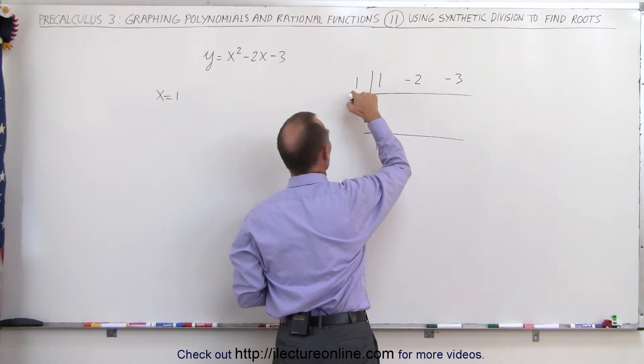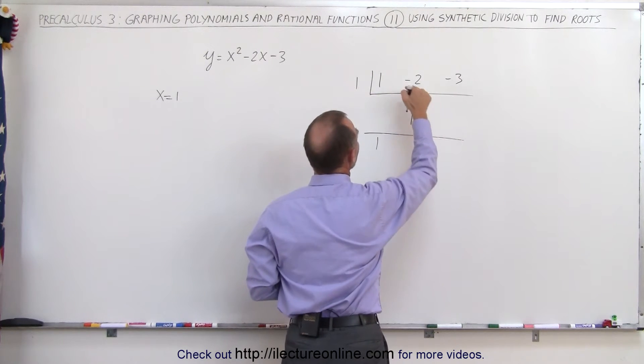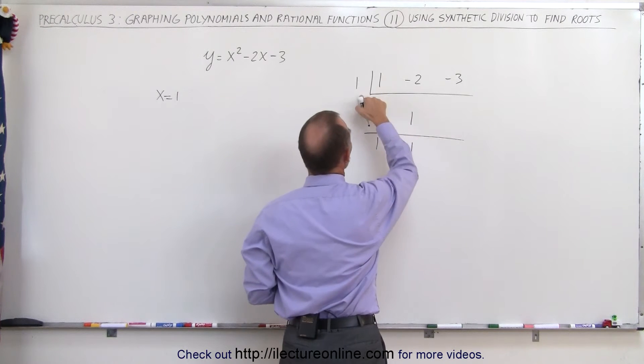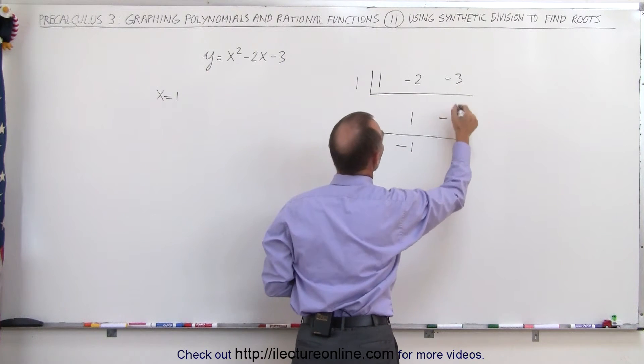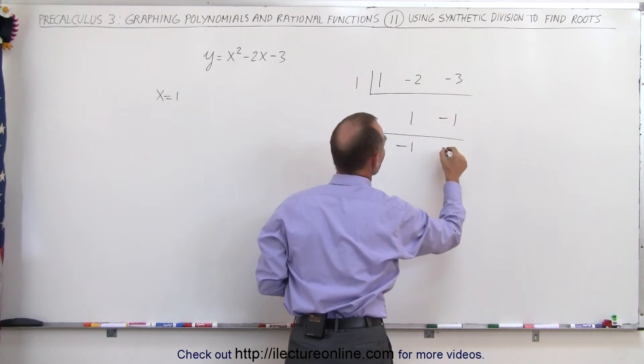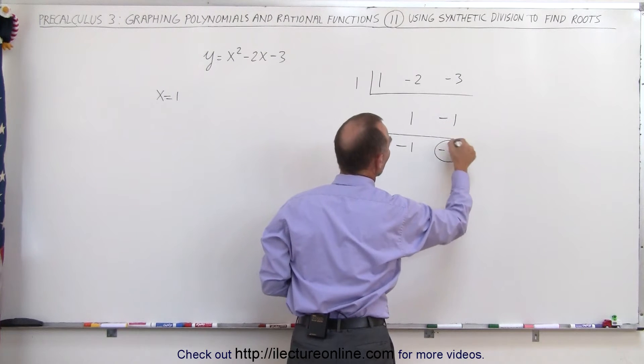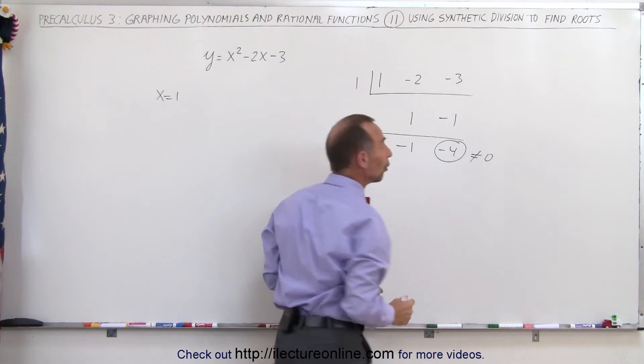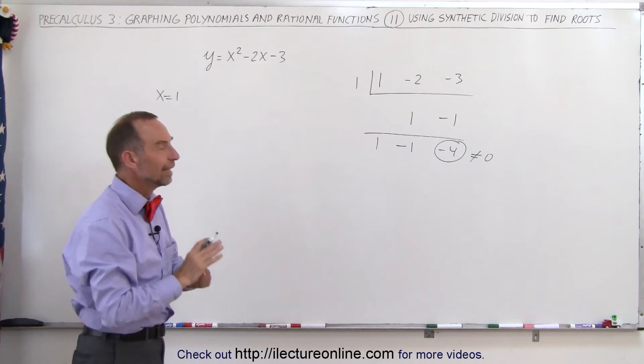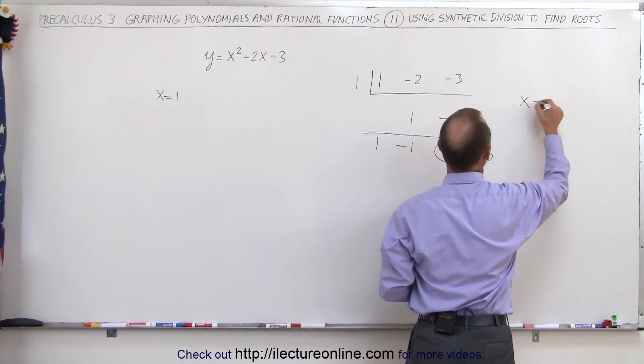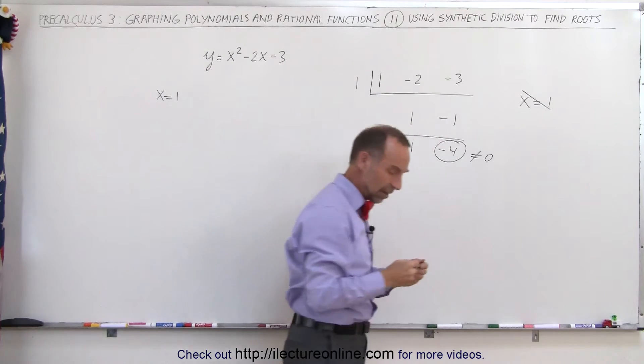We go one times one is equal to one. Negative two plus one is a negative one. One times a negative one is a negative one. Minus three add to minus one is equal to minus four. This number here is not equal to zero, which indicates that x equals one is not one of the roots.